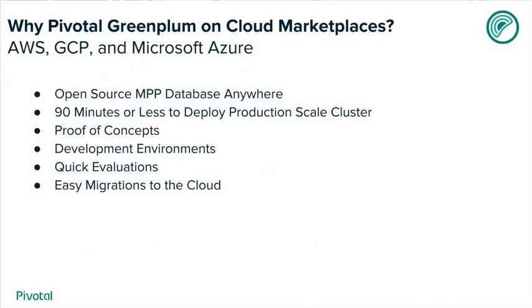It's the same software that you'd run in the cloud as you do on-premise. You can deploy a production-scale cluster in 90 minutes or less — and that's truly a production-scale cluster. It's great for proof of concepts and development environments: spin something up for a developer, let them use it, and then destroy it when done. It's great for quick evaluations, and it also makes migrations to the cloud easier.